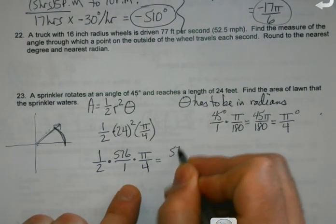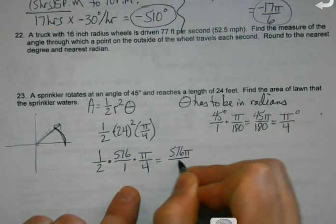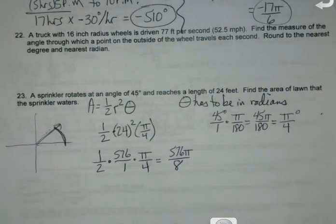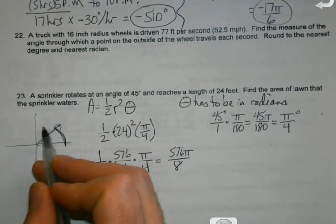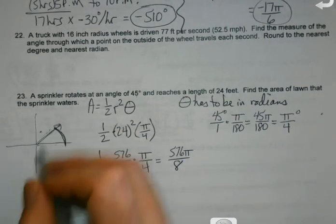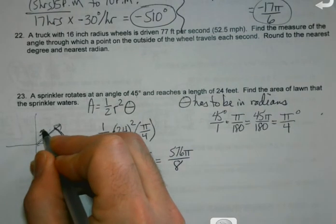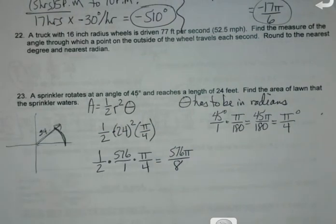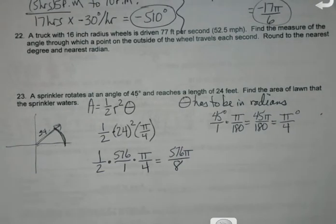Remember, my sprinkler, if it's rotating back and forth at a length of 24 feet, that's actually my radius. You'd have to square it first. I don't think you want to try and jump in there right away. What's 576 divided by 8? I think that goes in evenly.